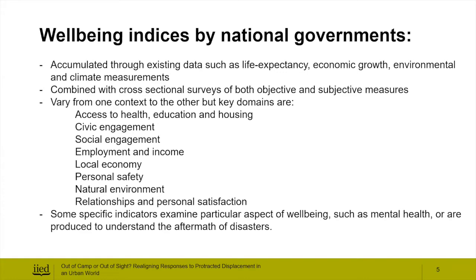National government indices usually combine pre-existing data on domains like life expectancy, economic growth, and environmental and climate measurement with cross-sectional surveys of residents. These often combine objective and subjective measures that seek to understand residents' experiences and perceptions of services, their civic and social engagement, and their feelings of personal satisfaction. Some national governments have also developed indicators to examine specific aspects of wellbeing, such as mental health or wellbeing in the aftermath of disasters — for example, the national comorbidity survey developed by the US government's National Center for Health Statistics with Harvard University following Hurricane Katrina.